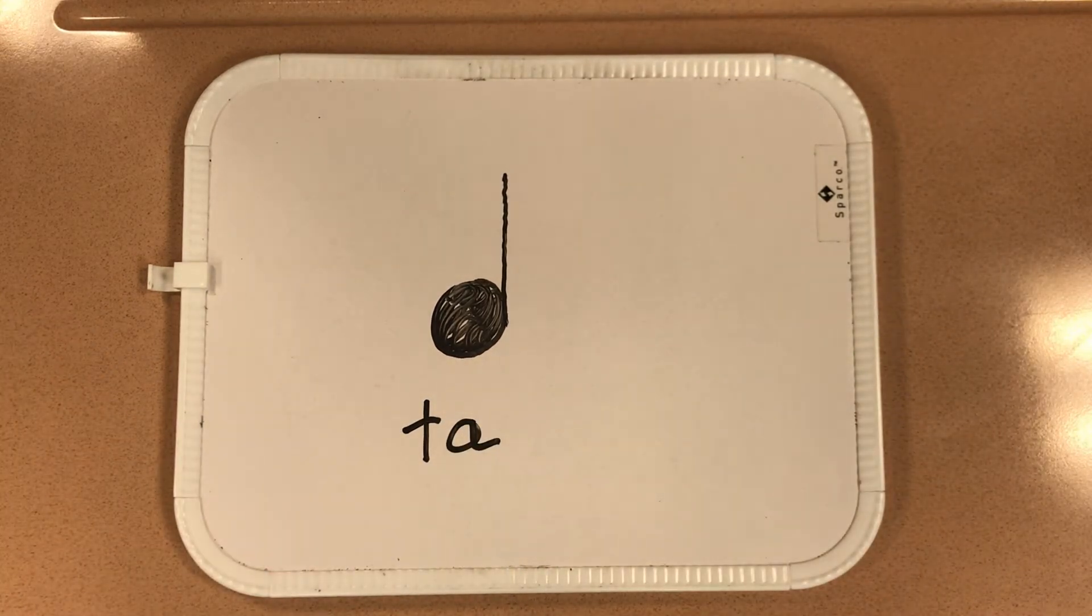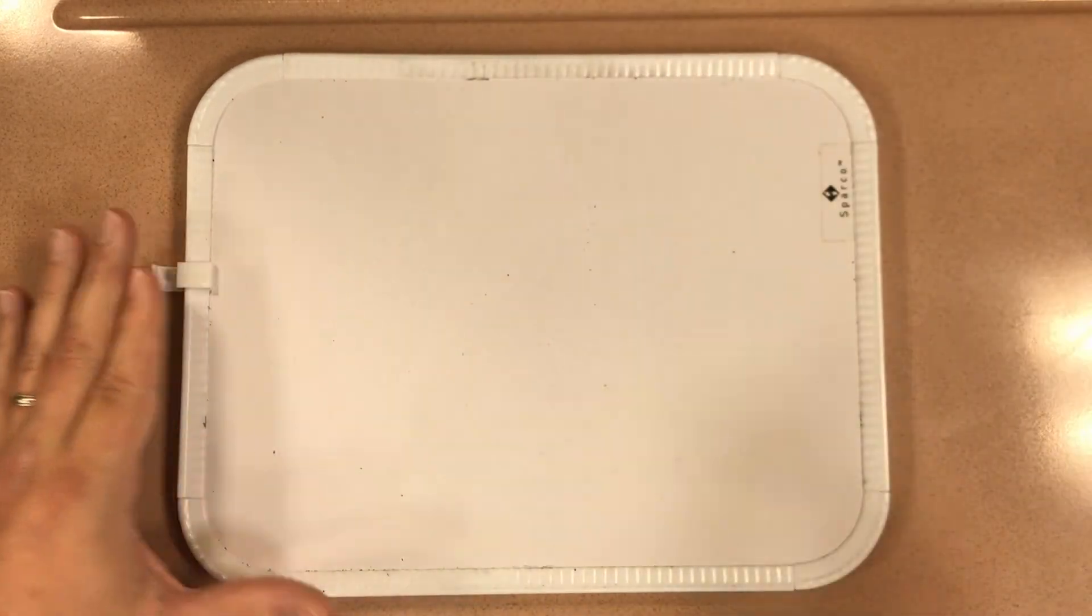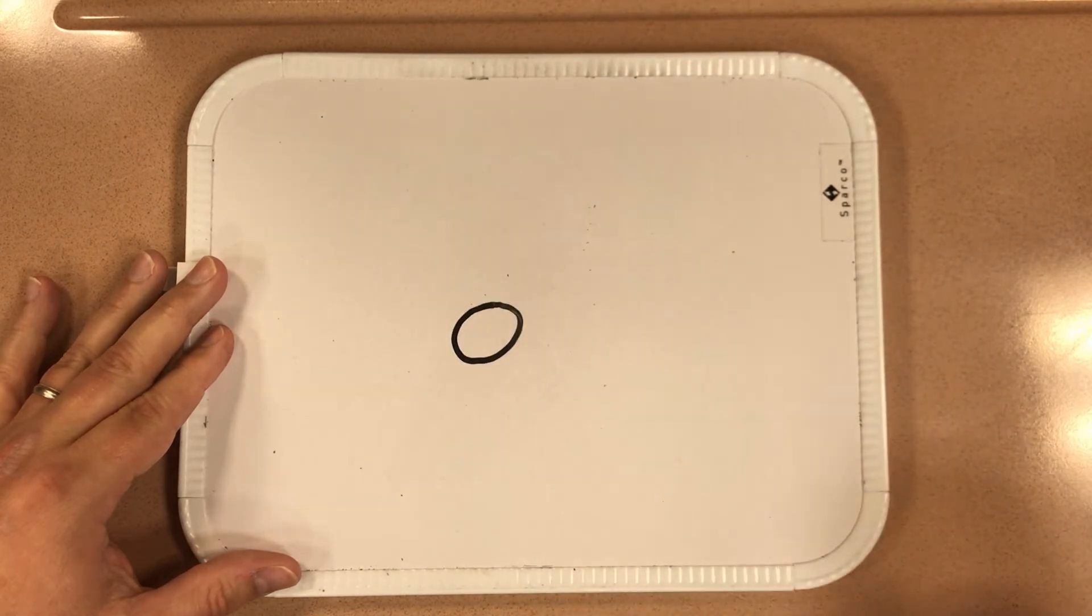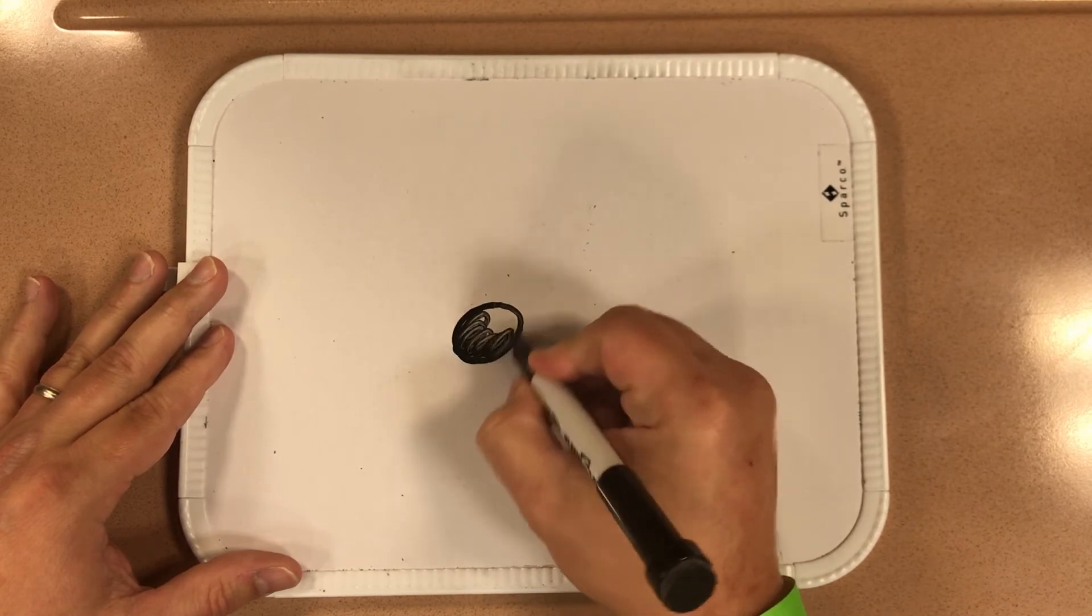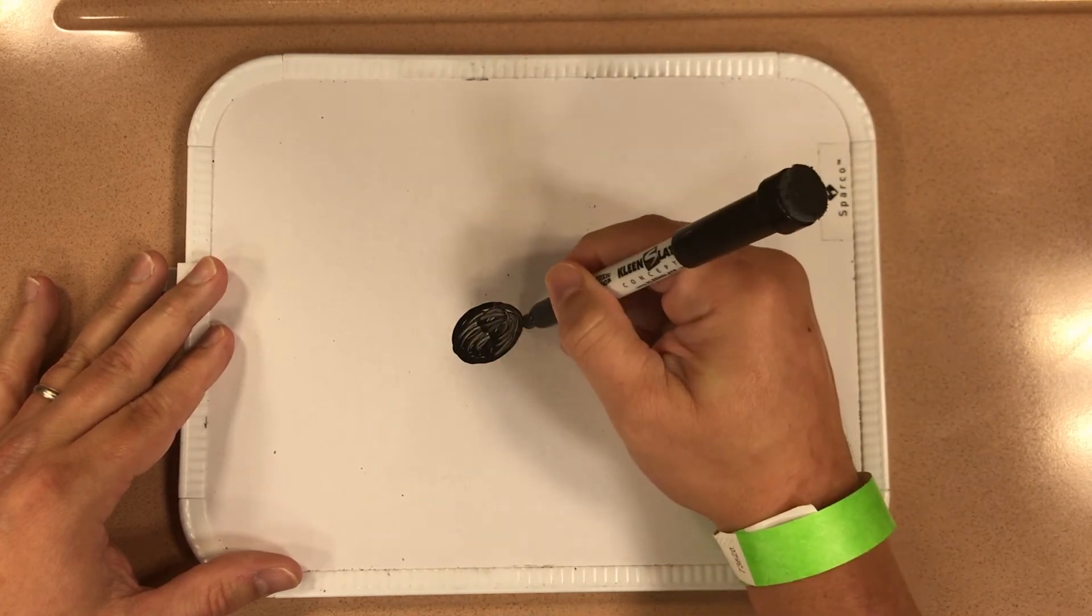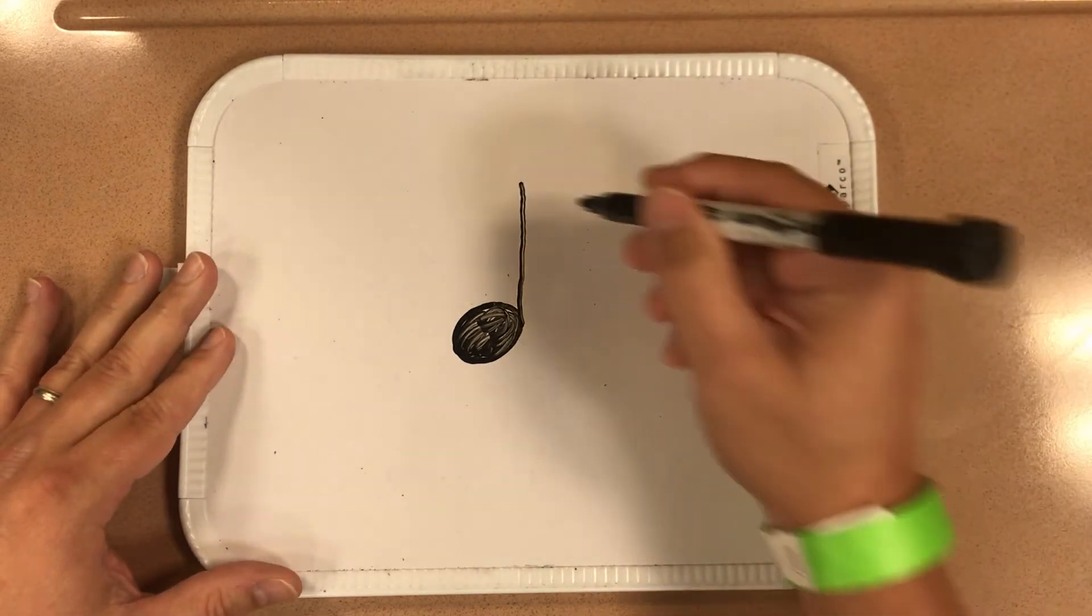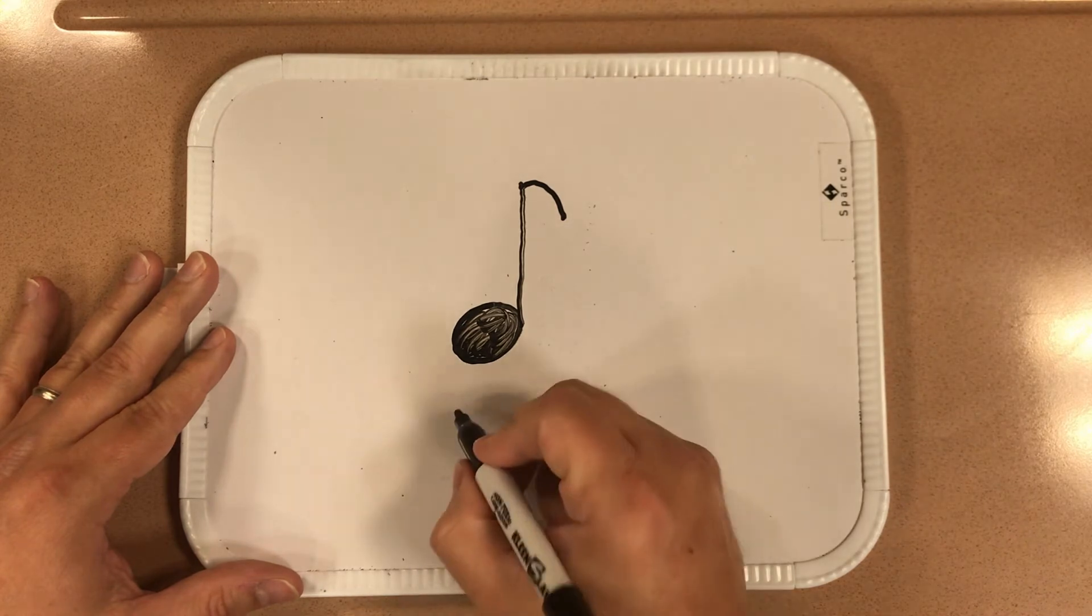And next we're going to draw a tee. And a tee looks just like a top. We have our circle and we color it in, and we do our stem just like that, except the tee is gonna have a little flag on the side. And there we have our tee.